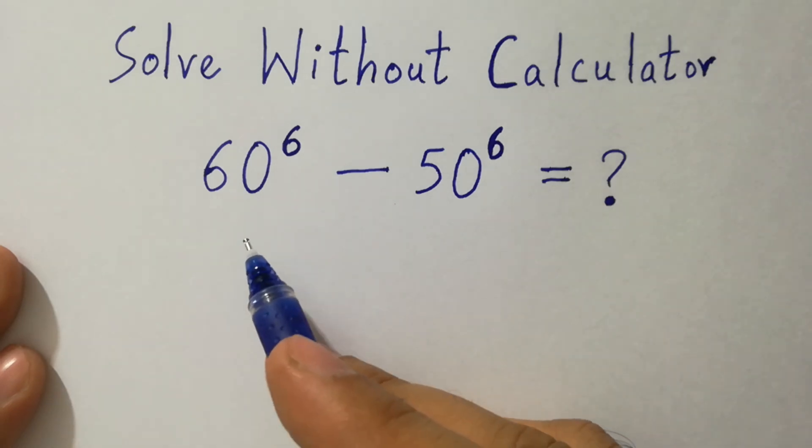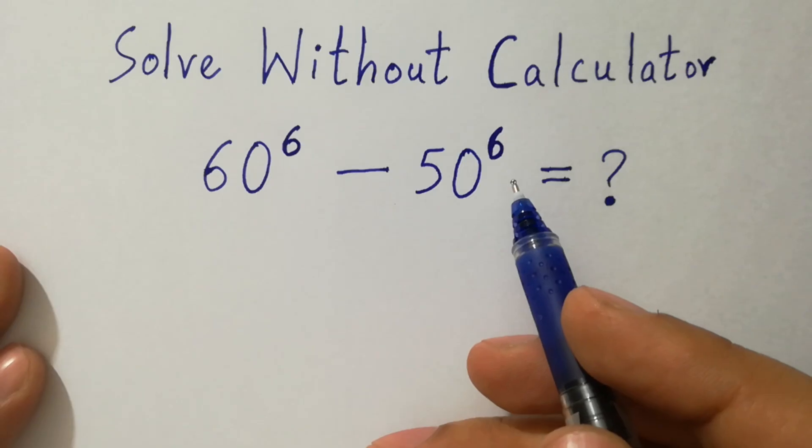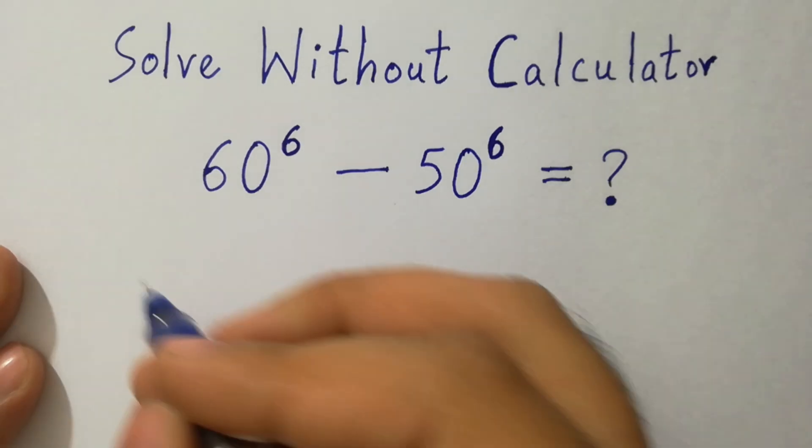Hello friends, 60 to the power 6 minus 50 to the power 6 equal to what? Let's have a solution.